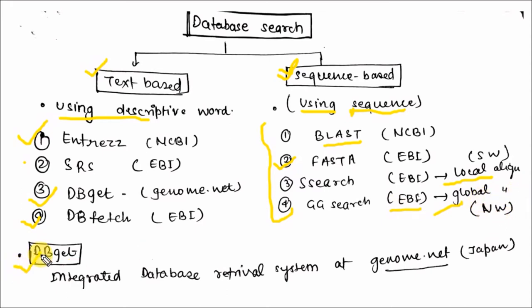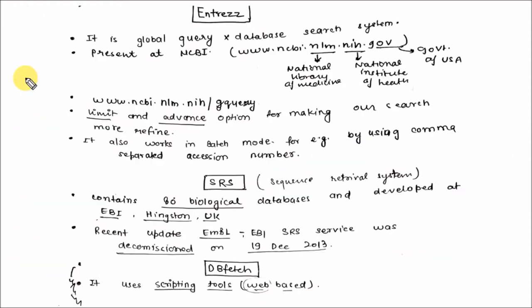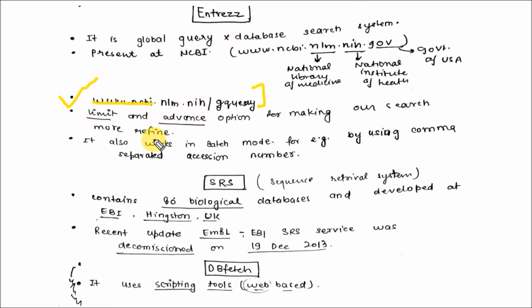DBGET is an integrated database retrieval system at genome.net in Japan. Now let's see the Entrez search tool. It is the global query search system present at NCBI — you can find this tool by simply visiting the link. Limit and advanced options are available for making the search more refined or more accurate. It also works in batch mode, that is by using comma-separated accession numbers.